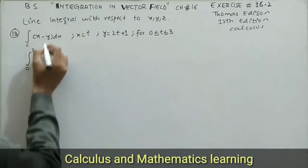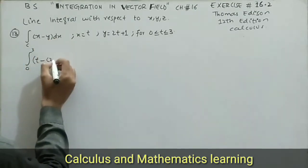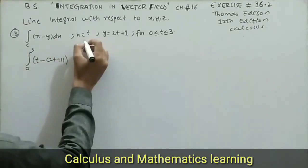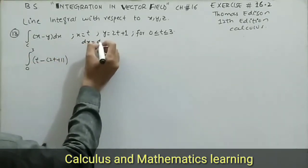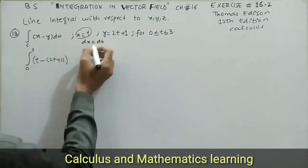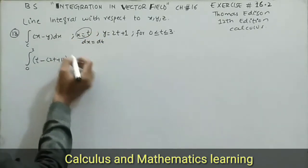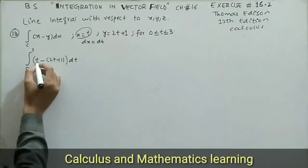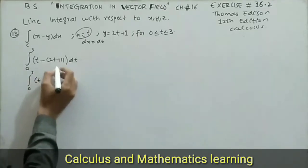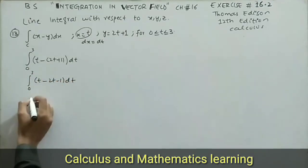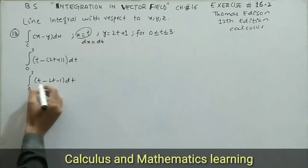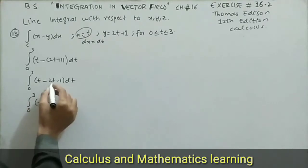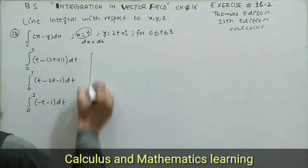Our x is t, so it becomes t minus t times y, where y is 2t plus 1. We need dx, so differentiating x equals t gives dx equal to dt. Substituting, the integral becomes from 0 to 3 of (t minus 2t minus 1) dt. Simplifying, t minus 2t gives negative t, so we have (negative t minus 1) dt.